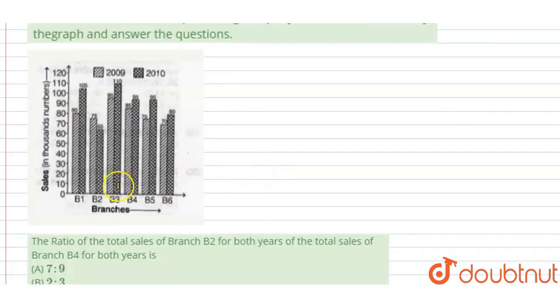In the graph we have two bars for each branch. This one is for 2010 and this one is for 2009.